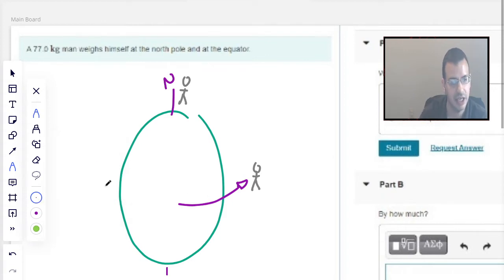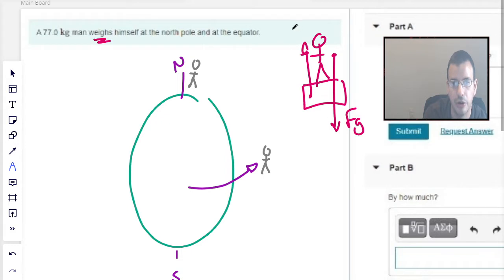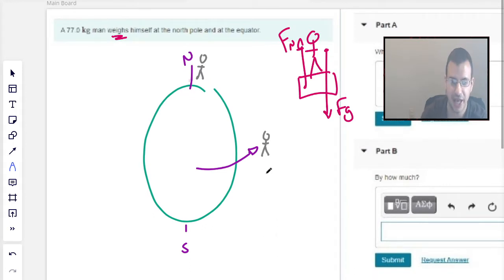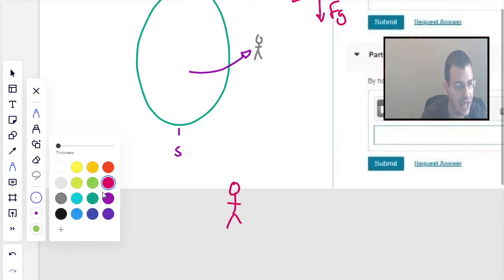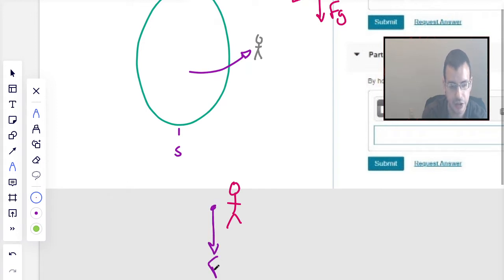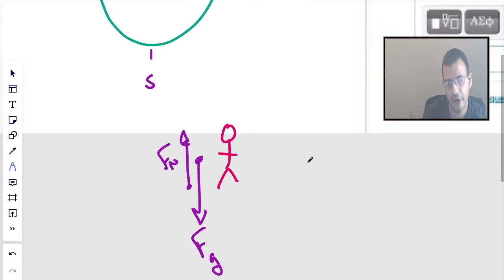And the idea here is when it says weighs, when you weigh yourself, what happens is you're standing on a scale. And you have force gravity going down, and what the scale is measuring is the force normal pushing back up. And so if we look at the person at the equator, he's going to have a force gravity going down and he's going to have a force normal going up. And normally those balance out, everything is the same.